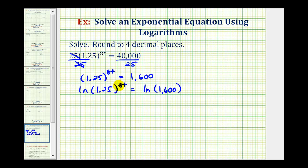Now looking at the left side, we can use the power property of logarithms to take the exponent of 8t and move it to the front of the logarithm, so we have 8t times natural log 1.25. So again, we'd have 8t times natural log 1.25 equals natural log 1,600.